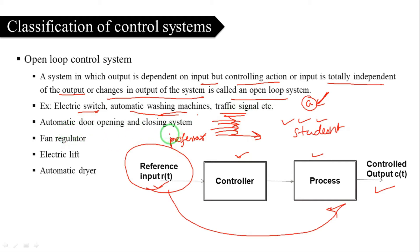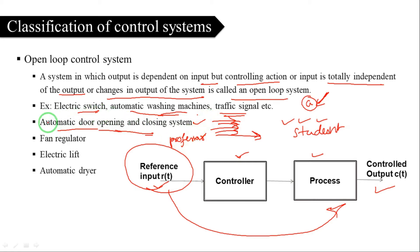Another example is an automatic door opening and closing system. In an open-loop control system, there is no recognition or feedback. The door opens because there is an IR sensor in front of the door. When any object breaks the IR sensor beam, it will automatically open the door.